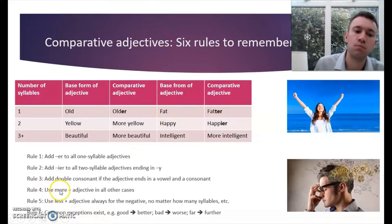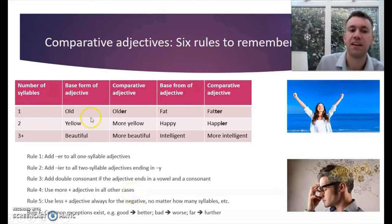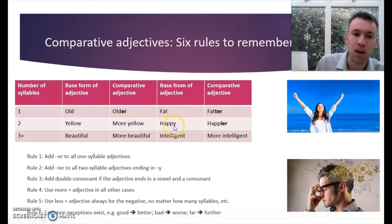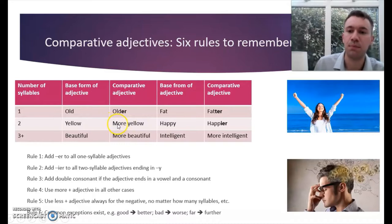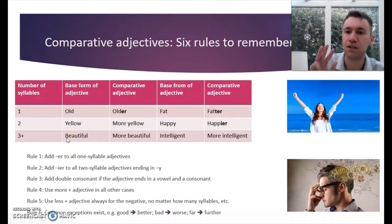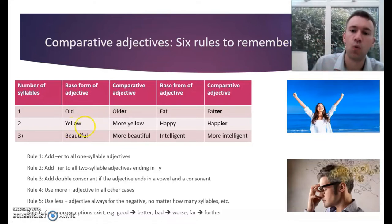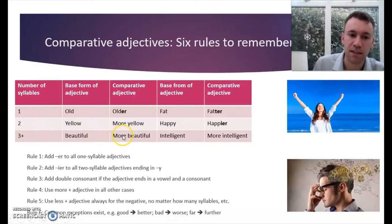Rule four: use MORE plus adjective in all other cases. 'Yellow' is a two-syllable word but it doesn't end in Y like 'happy,' 'angry,' or 'jolly.' Therefore the comparative form is 'more yellow.' 'Beautiful' is a three-syllable word, and all three-syllable words form the comparative by putting MORE in front of them: 'more beautiful.'